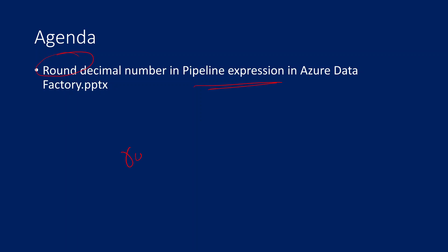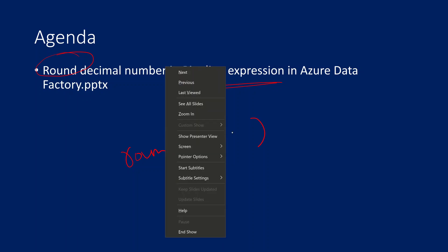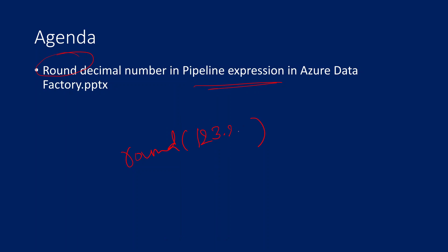You may already know that in mathematics we have something called a round function. For example, if I pass 123.231 and I want to round it to two decimal places, then it is going to return 123.23. It is going to cut all the decimal places after two places and return that value. This kind of round functionality — if you want to achieve it in the pipeline expression, how to do that? That is the requirement in this video.